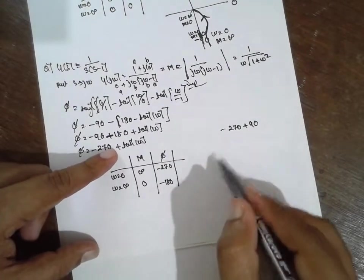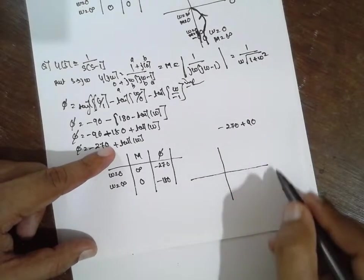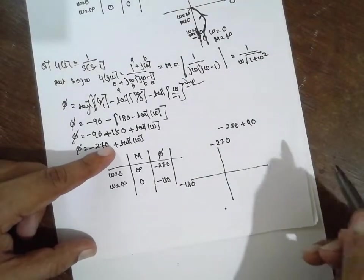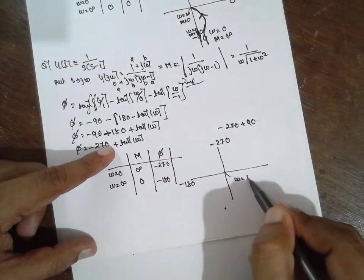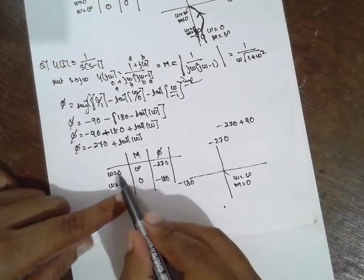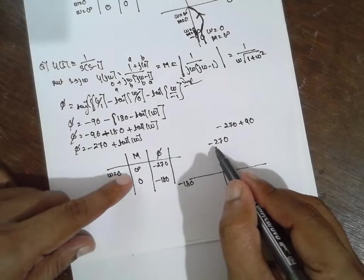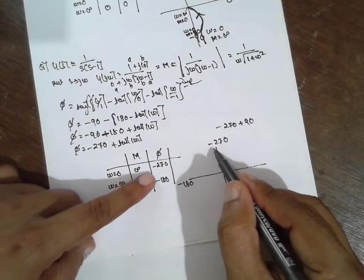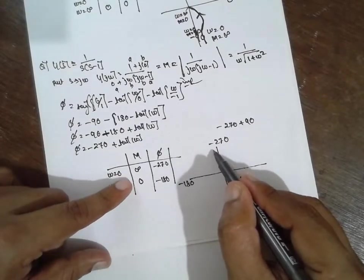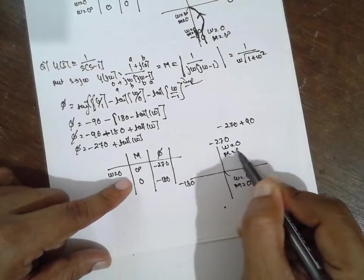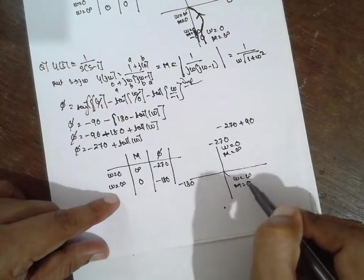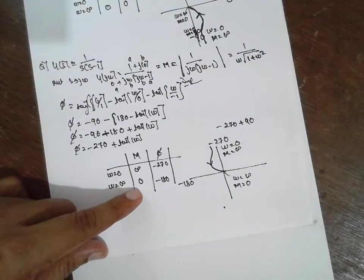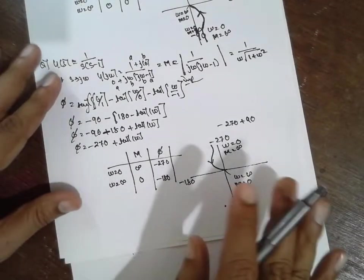Diagram for this one: axis showing 0, 90, 180, minus 270 degrees. When ω equals infinity, M equals 0. When ω equals 0, M is infinite. It starts at minus 270 degrees — starts here, and ends at minus 180 degrees. This is the spatial special point.